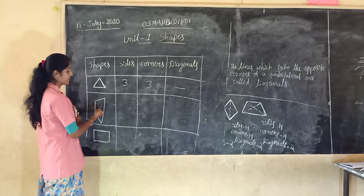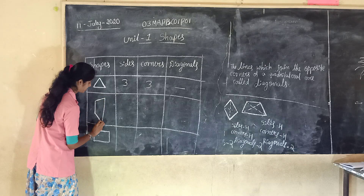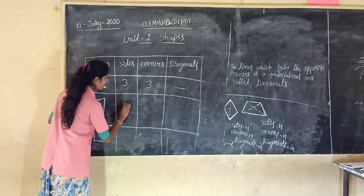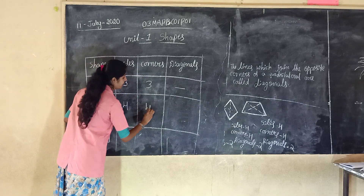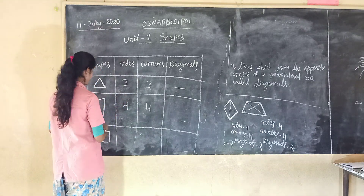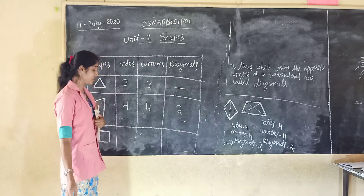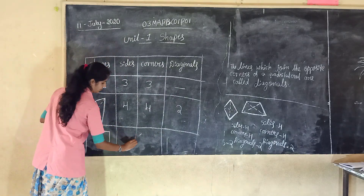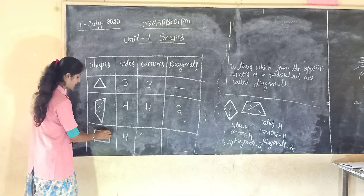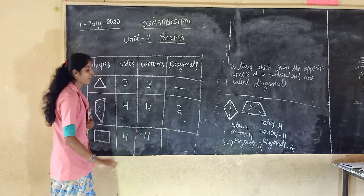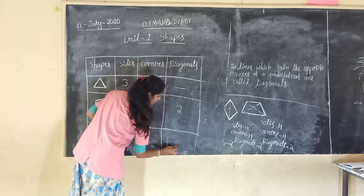Next, here. This is our quadrilateral. How many sides? Four sides — one, two, three, four. Total: four sides. And corners — one, two, three, four. Total: four corners. And diagonals? One, two — two diagonals. And here also: four sides, four corners, and two diagonals.